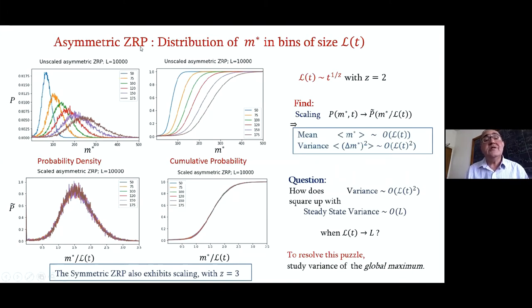Here it is. We look at the asymmetric version of the zero range process. And in bins of size L(t), what we find is there is very good scaling. Here are the plots for the probability distribution function, unscaled and scaled. You can see there's a collapse. This is a cumulative probability. Scaling, of course, implies immediately that both the mean and the standard deviation grow like L(t), or the variance grows as L(t) squared. But then you land up with a puzzle. How can the variance which is growing as L(t) squared reconcile with the steady state variance which we know from the exact solution grows like capital L?